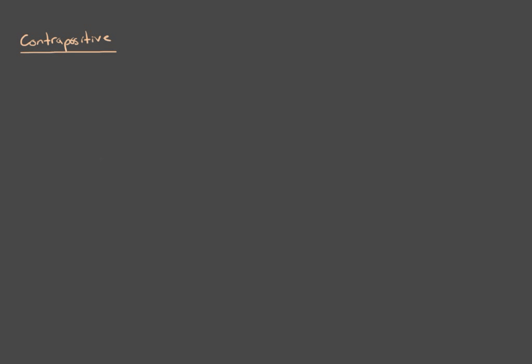This is the last thing we have to talk about with propositional logic, and we will finally be done and can move on to actual math. The contrapositive: suppose I have statements P and Q again, then the statement P implies Q is the same as not Q implies not P. That's what the contrapositive is — it's always equivalent to the original one. So whenever you have a statement P implies Q, it's the same as saying the contrapositive not Q implies not P.